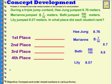Let's try to figure out who's in which place. Who jumped the farthest in the triple jump contest. So we need to compare our decimals. One thing I'm noticing between Hae Jung and Marianne is that Hae Jung jumped 8 and 76 hundredths, and Marianne jumped 8 and 7 tenths and I know that 7 tenths is the same as 70 hundredths. Beth is the same as 80 hundredths. So Beth would be in 1st place.